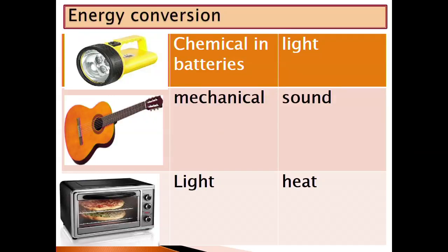Let's look at energy conversion — that is changing one form of energy to another. For example, we have chemical energy in batteries; when you put it in a torch and switch it on, it changes from chemical to light energy. On a guitar, we have mechanical energy; when you play it, the mechanical energy is converted to sound. In a microwave, we have light energy which is converted to heat energy when you want to make food warm. We should know different energies and how they are converted.